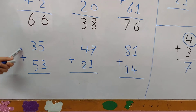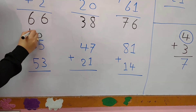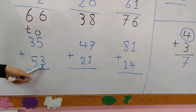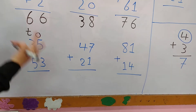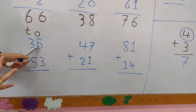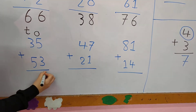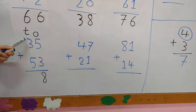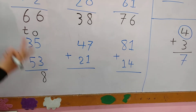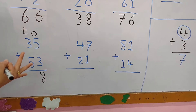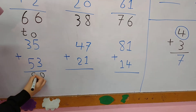35 plus 53. The first thing: write O and T. In the 1's column: 5 plus 3. I put the greatest number, 5, in my mind and 3 on my fingers and count after 5. After 5: 6, 7, 8. In the 10's column: 3 plus 5. I put 5 in my mind and 3 on my fingers and count after 5: 6, 7, 8. The answer is 88.